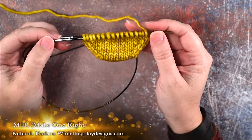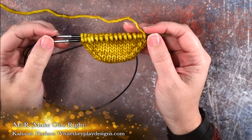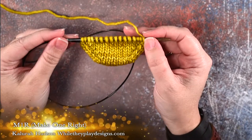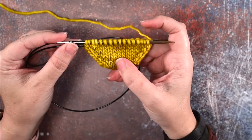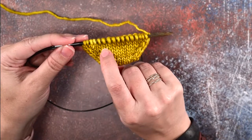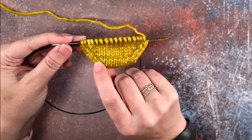Hi guys, this is Clara Hudson of While They Play Designs and in today's video I'm going to be showing you how to do a make one right or an M1R. This is just a one stitch increase that leans to the right of the stitch that you're placing it in.